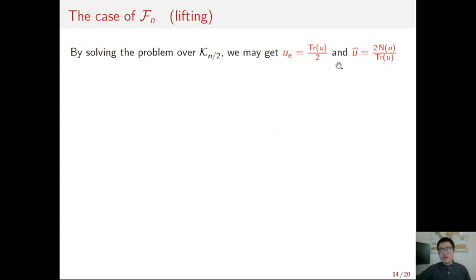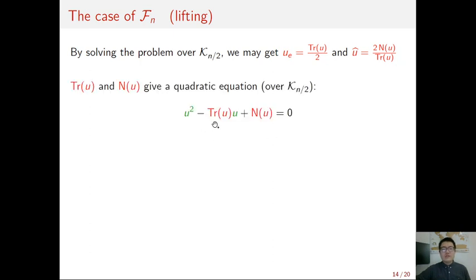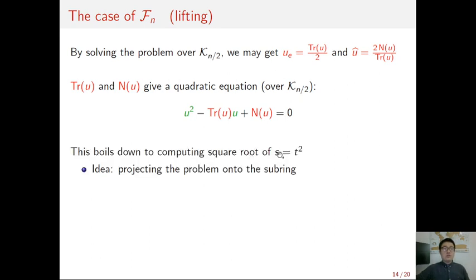And assume we can solve the recovery problem in the subfield, and we compute U_e and U_δ. Then, from these two subfield elements, we can compute the trace and norm of u. Now, the remaining work becomes to recover u from its trace and norm. We note that u and σ(u) are two roots of this quadratic equation over the field.